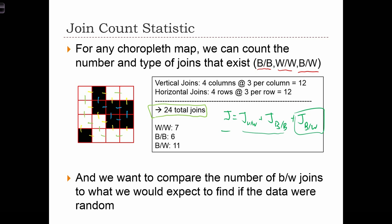Now, the logic behind the join count statistic is that we are going to use these quantities. Specifically, we're going to use the black-white join count quantity to determine whether or not the map pattern is clustered, random, or uniform.